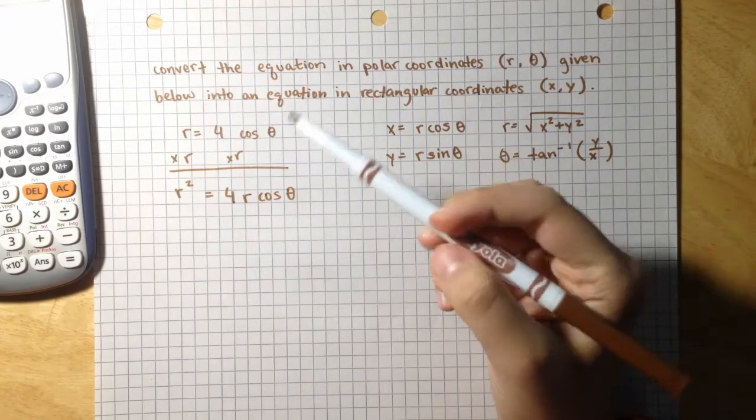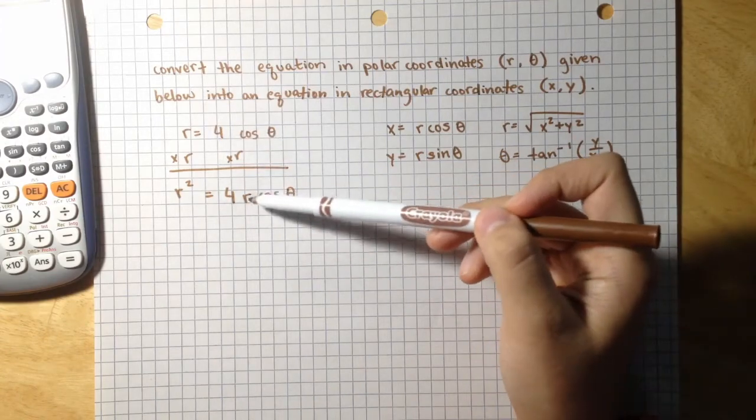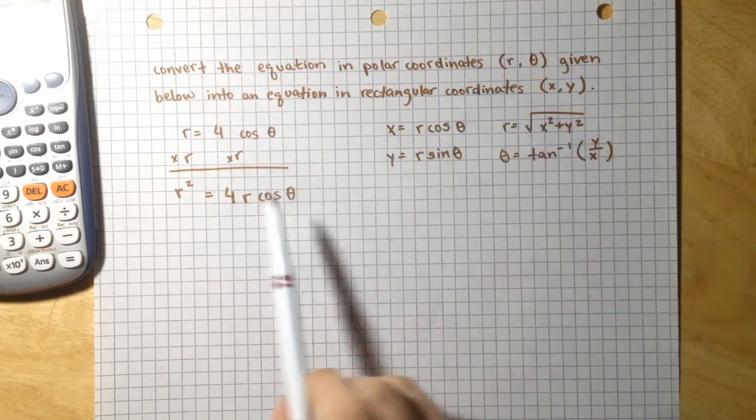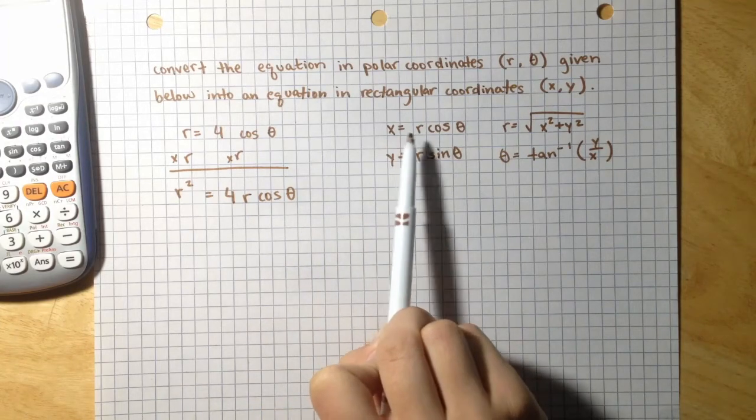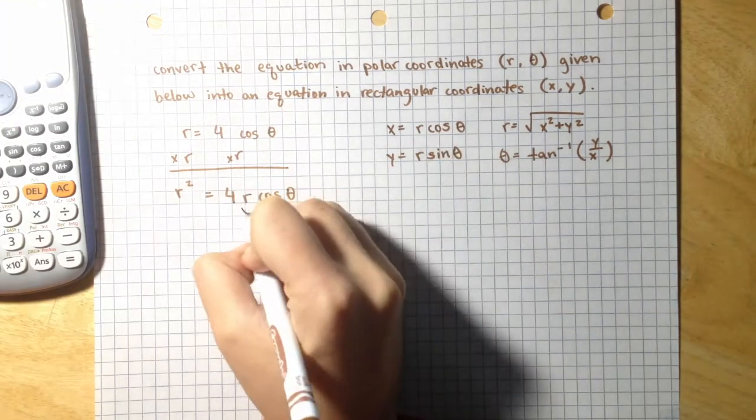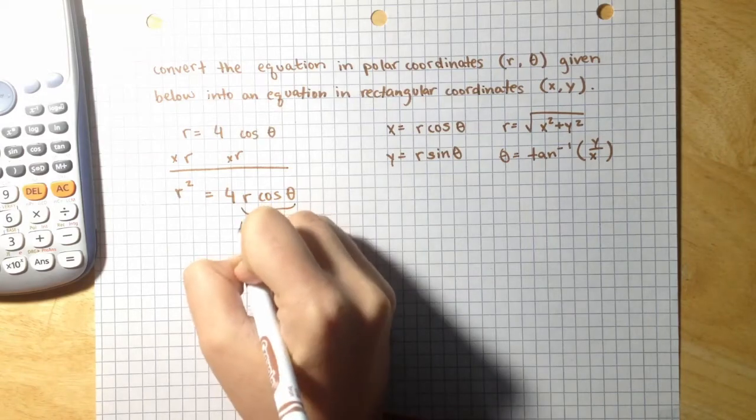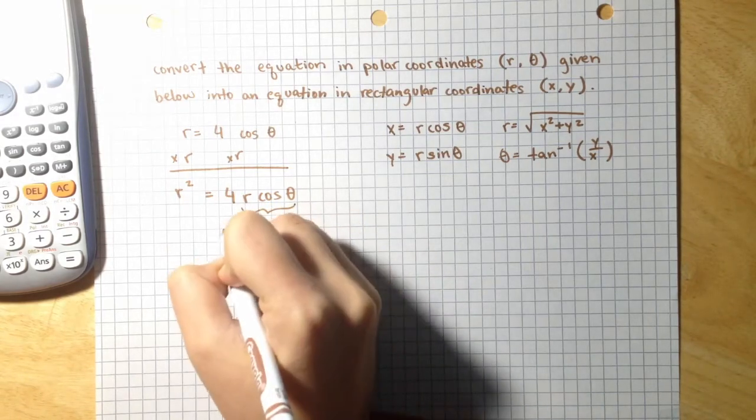So notice why we need r cosine theta here, because we can substitute r cosine theta with x, since x equals r cosine theta. We can rewrite this as r squared equals 4x.